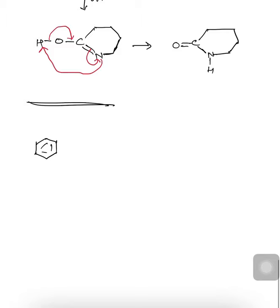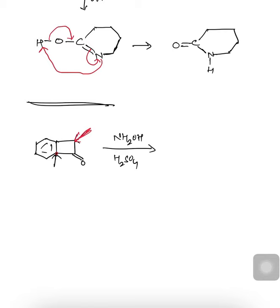Another example: a benzene ring attached to a four-membered ring ketone. Since this is an NH-insertion (amine insertion) reaction and we carry out the Beckmann reaction in presence of NH2OH and H2SO4: there are two R groups — the aryl carbon and the cyclic carbon. The aryl carbon has higher migratory aptitude, so NH is inserted between the carbonyl and the aryl carbon. The four-membered ring becomes a five-membered ring containing one NH and one C=O.